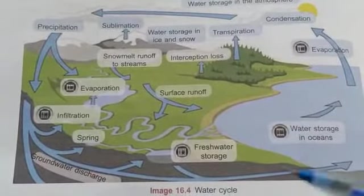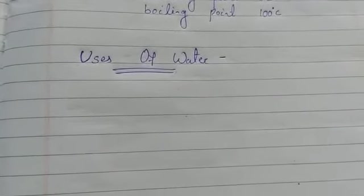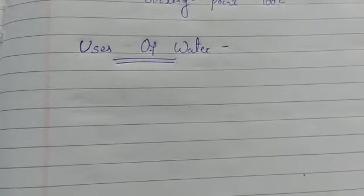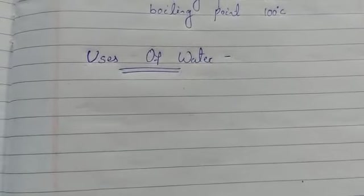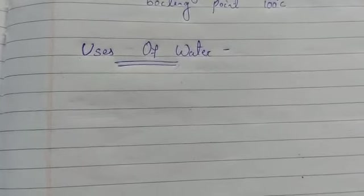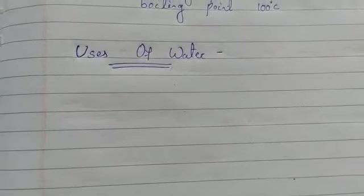Since however much water we use comes back to earth in the form of rain, water is considered a renewable resource. Water is very important — without it we cannot imagine life. The main uses of water include: for living organisms, domestic purposes, farming, industries, and electricity generation.